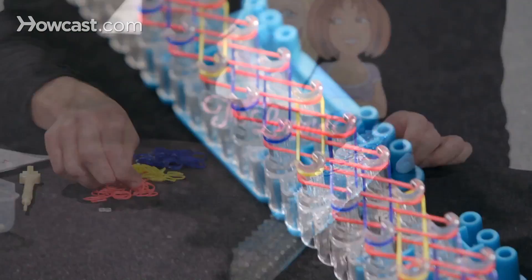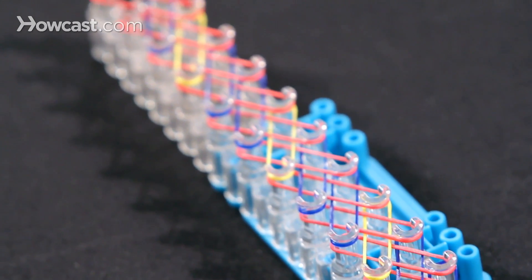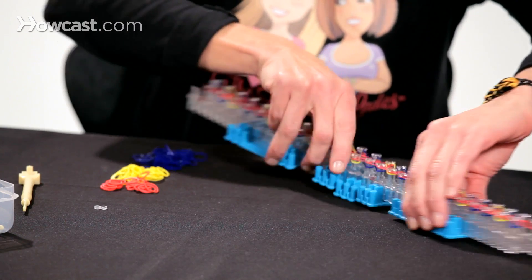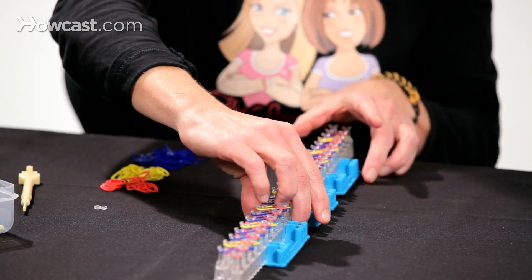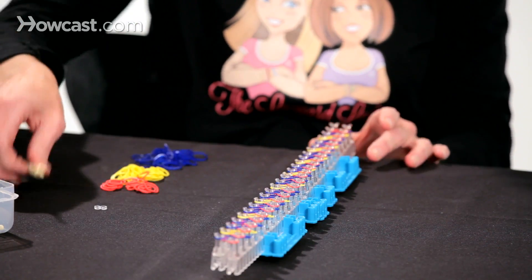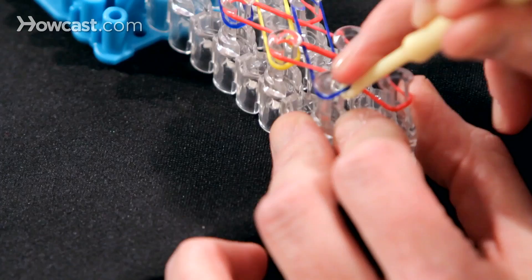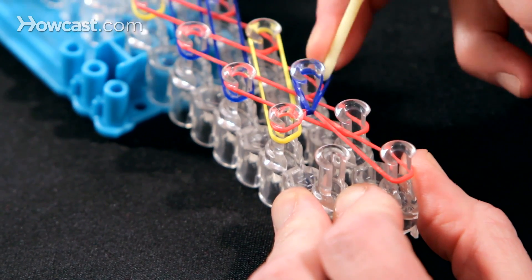So this is what your loom should look like after you're done placing the bands for the braid bracelet. Now we're ready to hook. So we carefully have to turn this around and begin our hooking. Grab your hook.